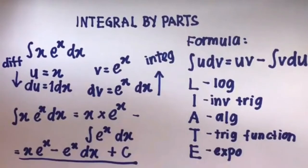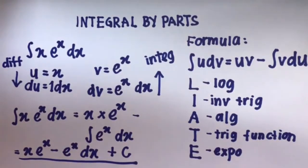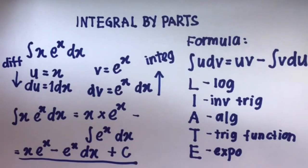Integration by parts makes this solvable — makes it integrable, like magic. You can check the answer by differentiating what you got; you should get back x·e^x. In summary: pick U and DV, find DU and V, then use the formula. If you pick the wrong U and DV the first time, don't panic. You can try something else — part of getting good at this is bumping up against what doesn't work. Don't forget the plus C for indefinite integrals.